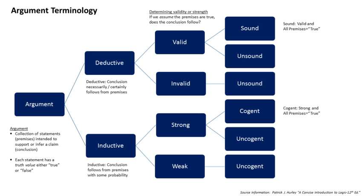Argument by analogy may be thought of as argument from the particular to the particular. An argument by analogy may use a particular truth in a premise to argue towards a similar particular truth in the conclusion. For example, if A — Plato was mortal, and B — Socrates was like Plato in other respects, then asserting that C — Socrates was mortal — is an example of argument by analogy, because the reasoning proceeds from a particular truth in a premise to a similar particular truth in the conclusion, namely that Socrates was mortal.